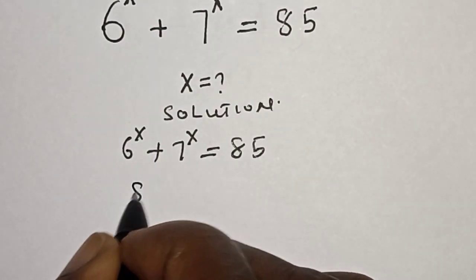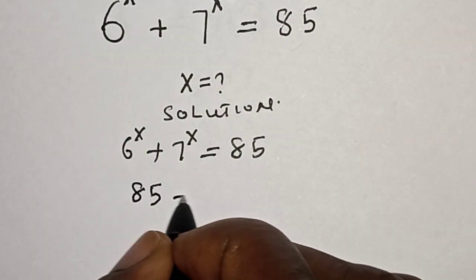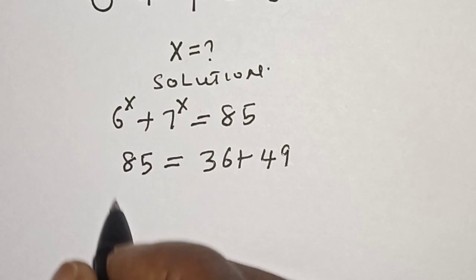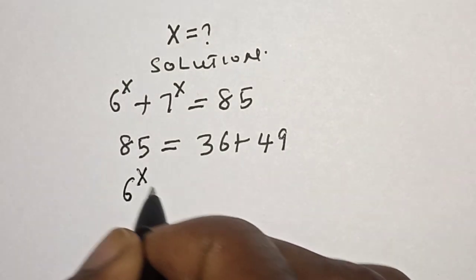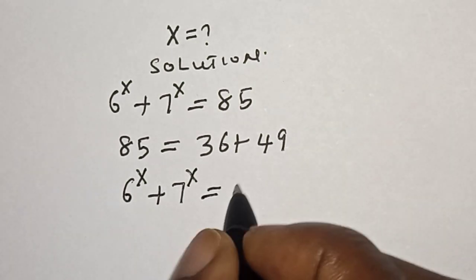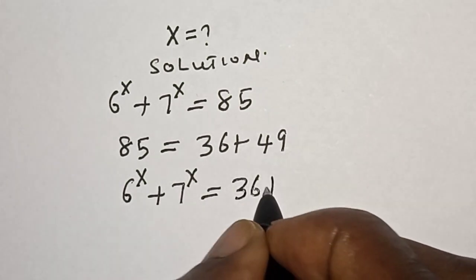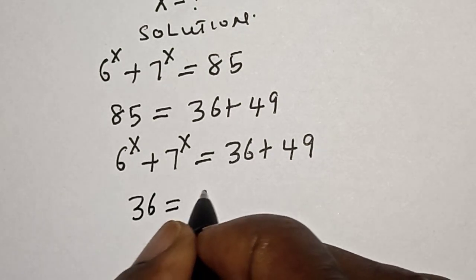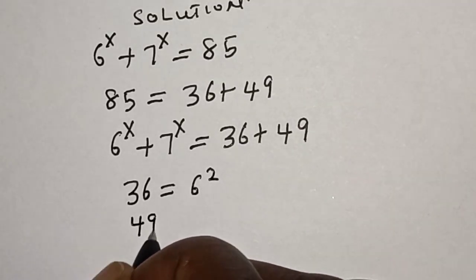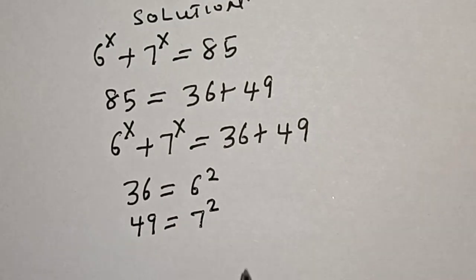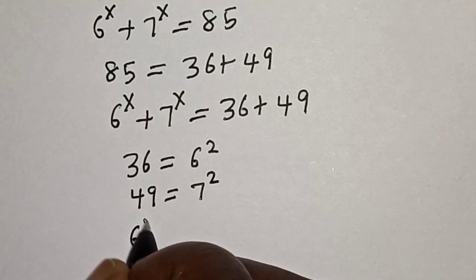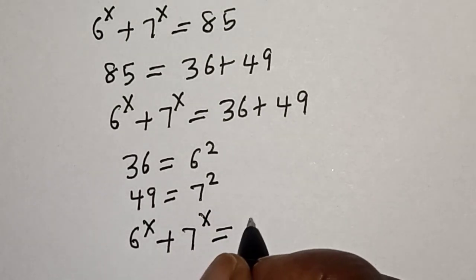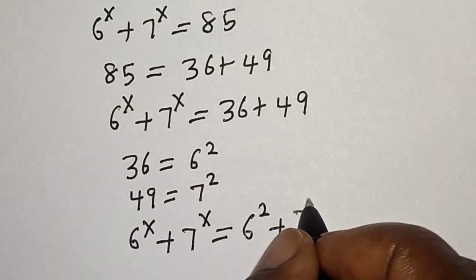85 can be split into two parts: 36 plus 49. So we have 6 raised to power s plus 7 raised to power s is equal to 36 plus 49. Now 36 is equal to 6 squared and 49 is equal to 7 squared. Replacing, we have 6 raised to power s plus 7 raised to power s is equal to 6 squared plus 7 squared.